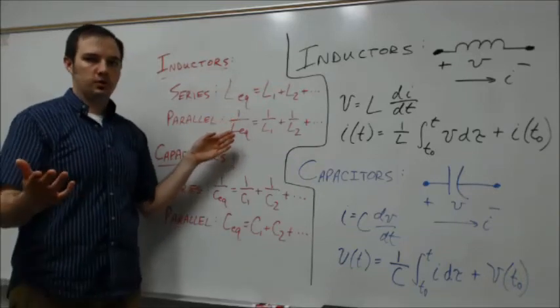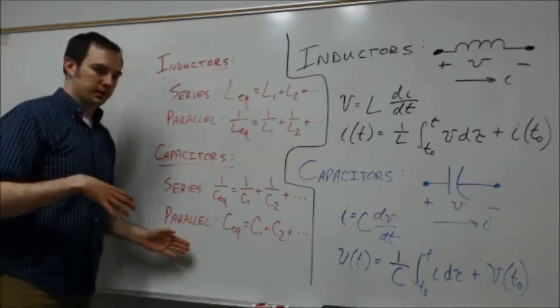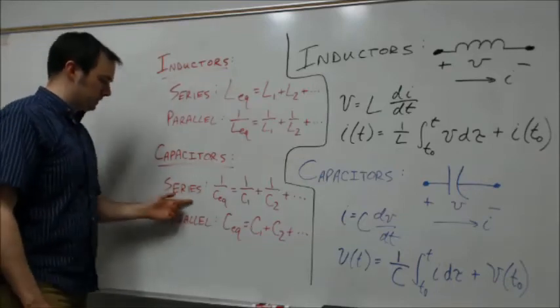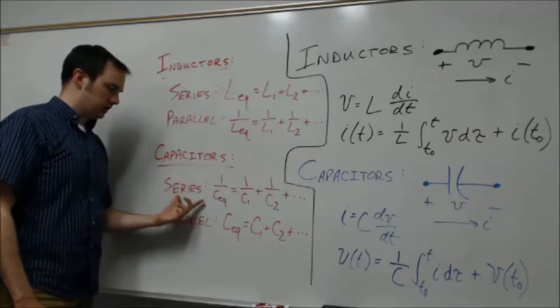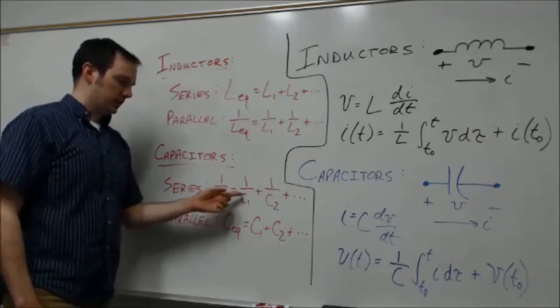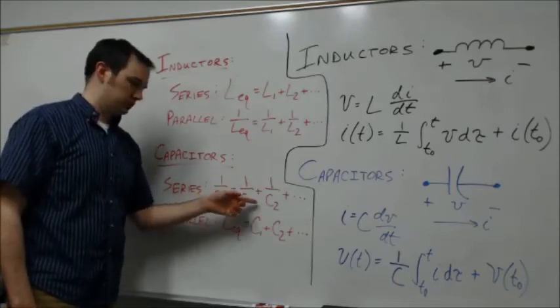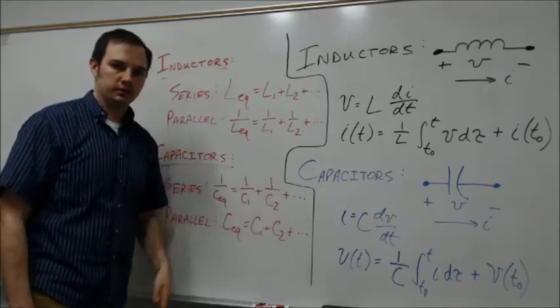Now capacitors are sort of like the opposite case. So with capacitors, the series equivalent capacitance is one over that equivalent capacitance is the sum of the inverse of each of the individual capacitances: one over C1 plus one over C2, plus however many other capacitors you have in series.